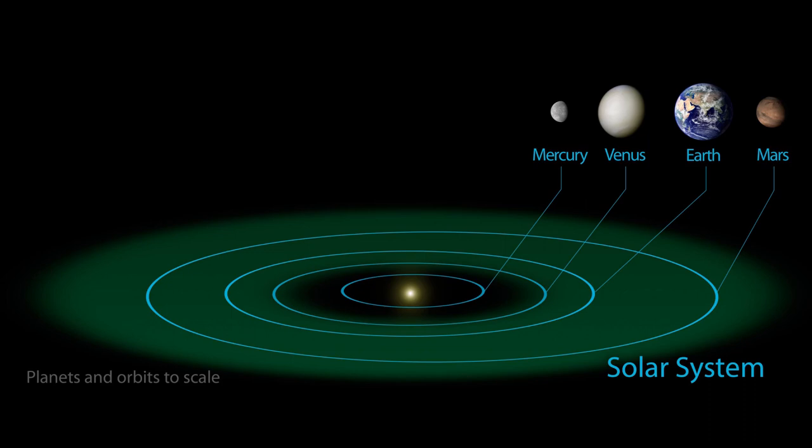In astronomy, the region around the star where a planet could support liquid water at its surface is called the habitable zone. The green region here is the habitable zone of our solar system. Venus and Mars are in this zone, but are either too hot or too cold for liquid water.